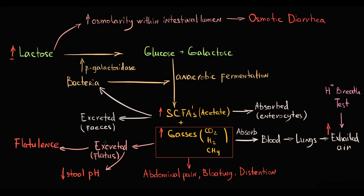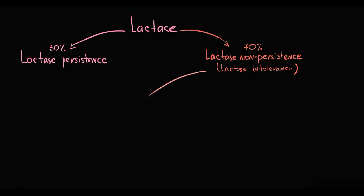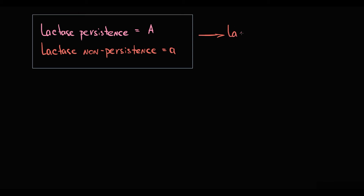There are a few reasons why lactase levels can be low. As already discussed, lactase activity can gradually decline with increasing age, and this process is genetically regulated. We know that lactase persistence is inherited as a dominant trait and lactase non-persistence as a recessive trait. Humans who are lactose intolerant have two recessive alleles. Humans who are heterozygous can have partial lactose intolerance or may be totally asymptomatic.